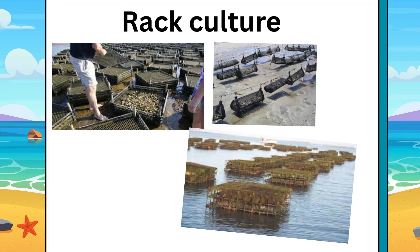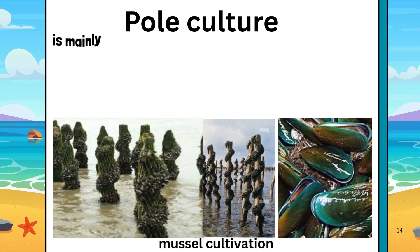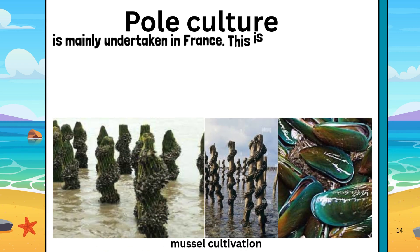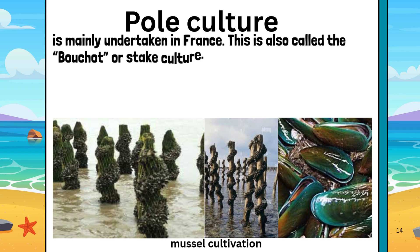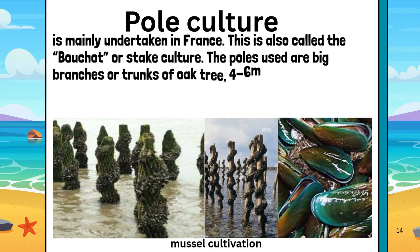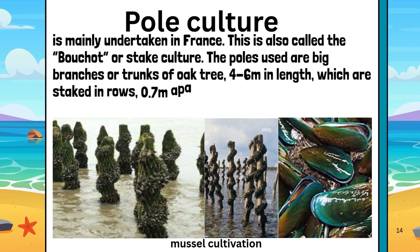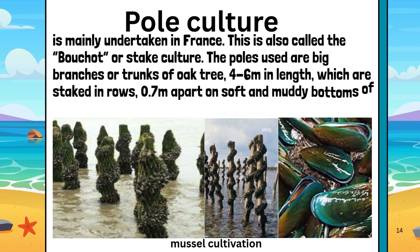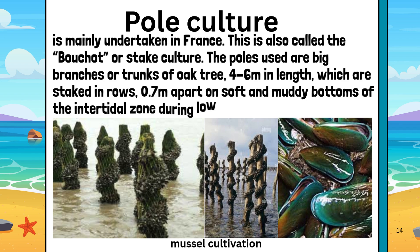Rack and bag oyster culture. Pole culture is mainly undertaken in France. This is also called the bichot or stake culture. The poles used are big branches or trunks of oak tree, 4–6 meters in length, which are staked in rows 0.7 meters apart on soft and muddy bottoms of the inner tidal zone during low tide.